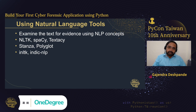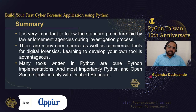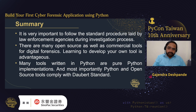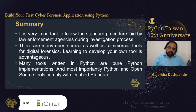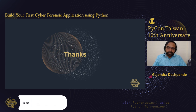In summary, it is very important to follow the standard procedure laid out by law enforcement agencies during the investigation process. There are many open source as well as commercial tools for digital forensics, and using open source tools satisfies the Daubert standard better than commercial tools. Learning to develop your own tools is always advantageous as it saves money and improves coding skills. Many tools written in Python are pure Python implementations, and most importantly Python and open source tools comply with the Daubert standard. Thank you everyone for attending my talk.